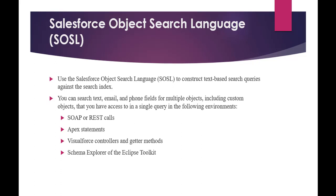SOSL is basically used to search for a particular text across different objects when we are not aware of which object the particular text lies in. In those cases, you are going to use SOSL. SOSL is used to construct text-based search queries against the search index.